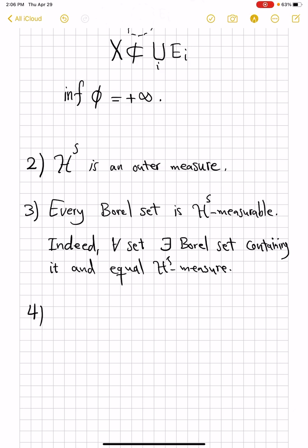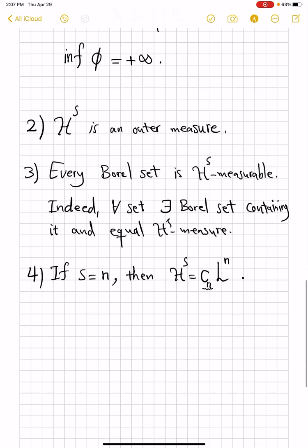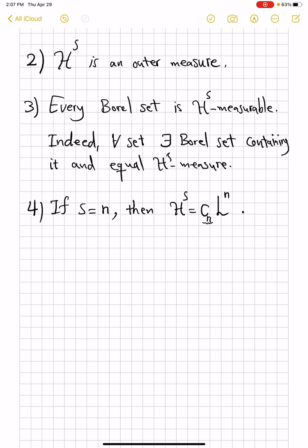It's actually Borel regular, which means for every set, there exists Borel set containing it and equal measure to it, equal H^S-measure to it. So, these are particularly nice measures on spaces. So, indeed, we're talking about a measure. Property number four, remember, we wanted to generalize our notions of length and curves. So, is H^S really achieving that? So, number four is that if S is some integer, a positive integer, then H^S is some universal constant. So, let's say C, which depends on N, times the Lebesgue measure. So, it's basically the Lebesgue measure.